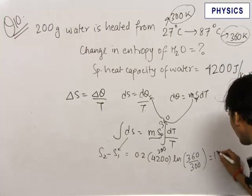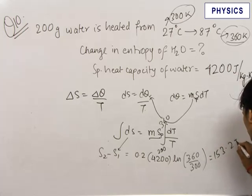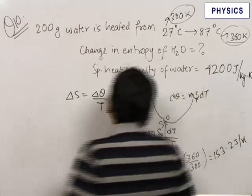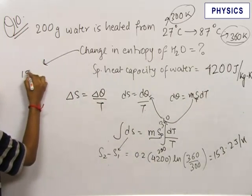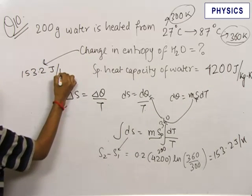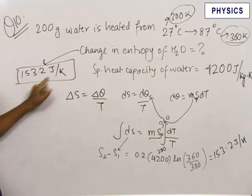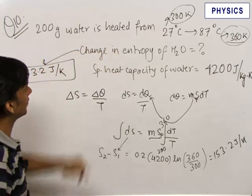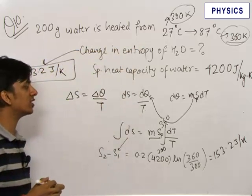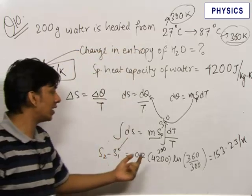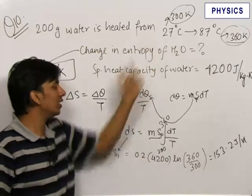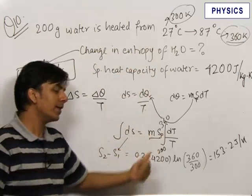This comes out to be equal to 153.2 joules per kelvin. So final answer for the change in entropy of water comes out to be equal to 153.2 joules per kelvin, when the water temperature is risen from 27 degrees Celsius to 87 degrees Celsius. The thing which you should have noted down here is that when the temperature is not constant then the change in entropy is found by integrating.